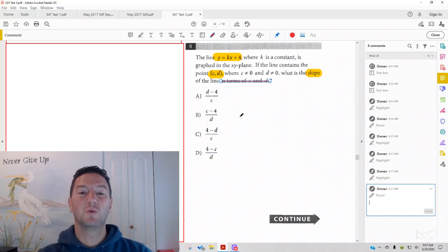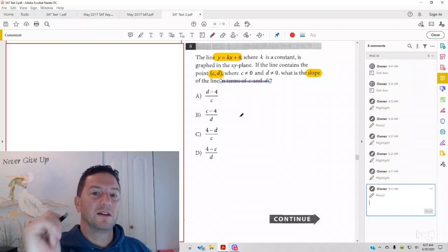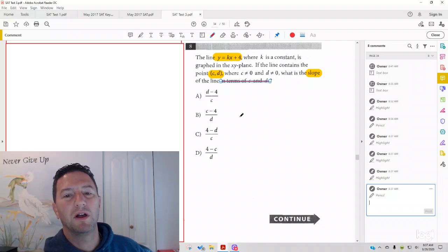Now, the first way I show you is the way you want to do it, and the second way I show you is going to be picking numbers, which is a process that you should know that you could use, but you want to apply it to a different problem, or if you just don't see how you could get this problem correct.